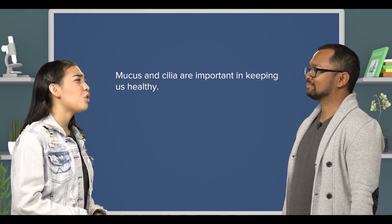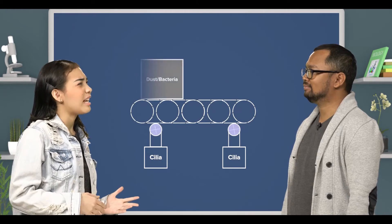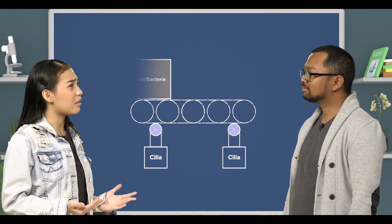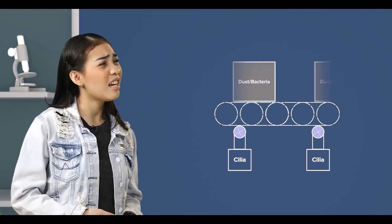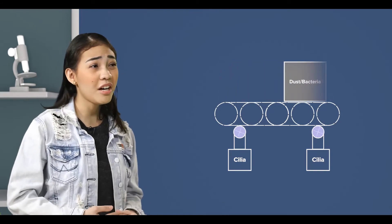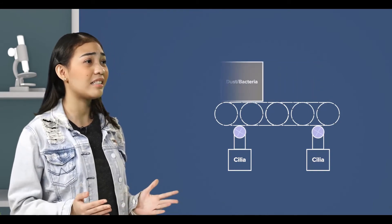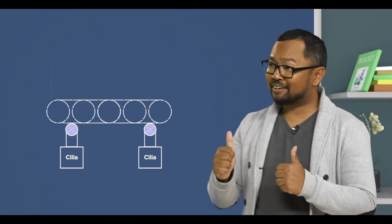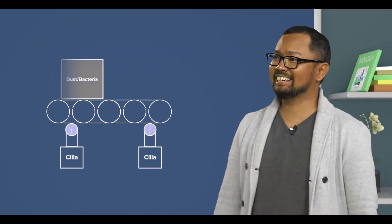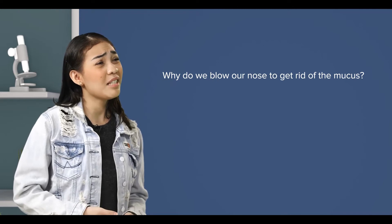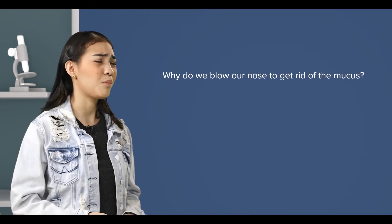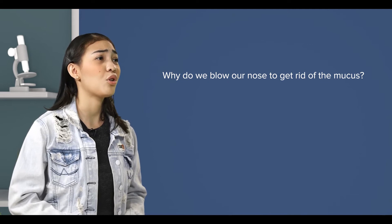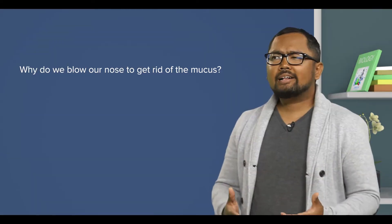That's right. So, mucus is more like a conveyor belt, and cilia is the machine under the conveyor belt. Meanwhile, the dust and the bacteria are the suitcases and boxes on top of the conveyor belt, right? Very good analogy. But why do we sometimes need to blow our nose to get rid of the mucus? Isn't it supposed to simply go to our throat?